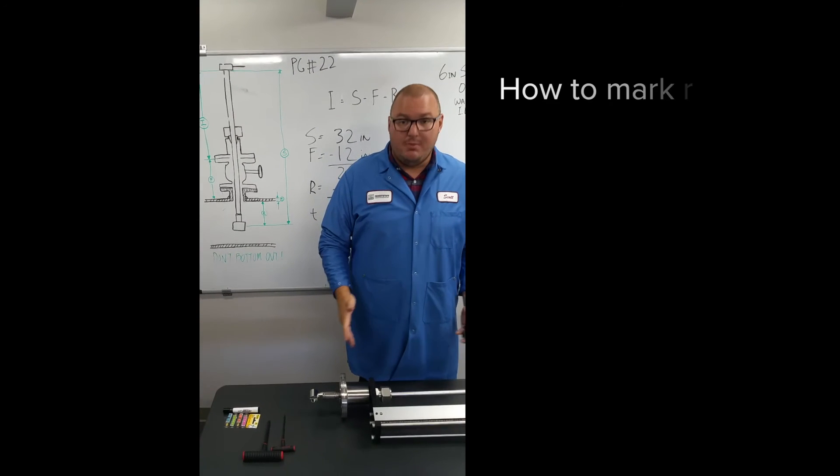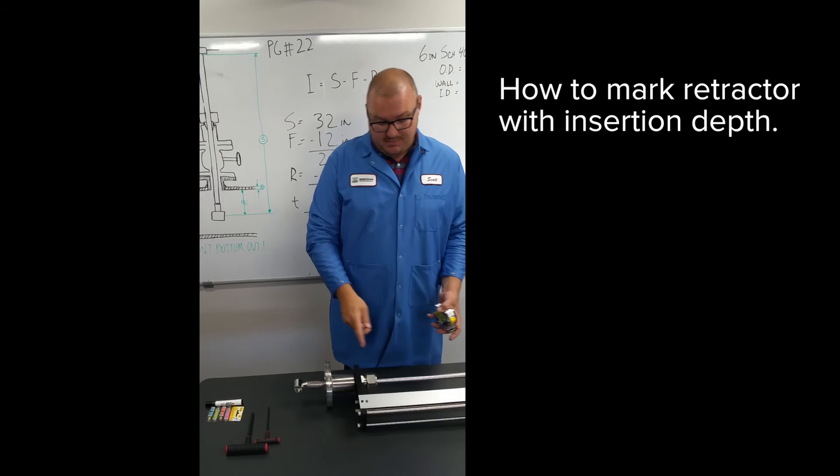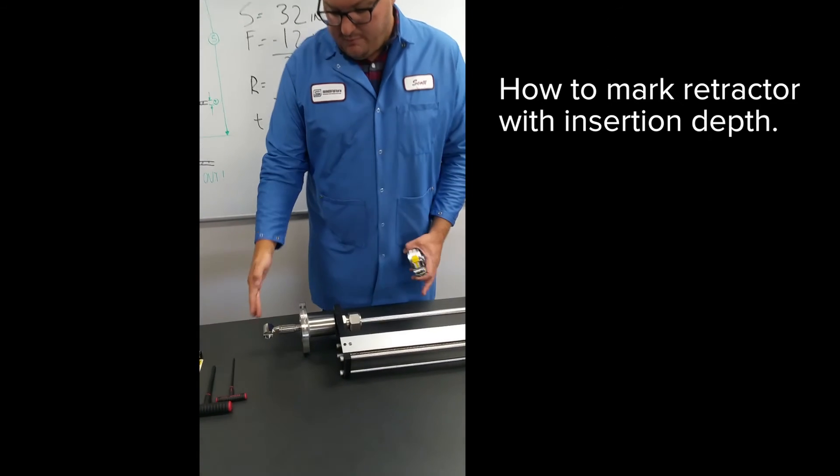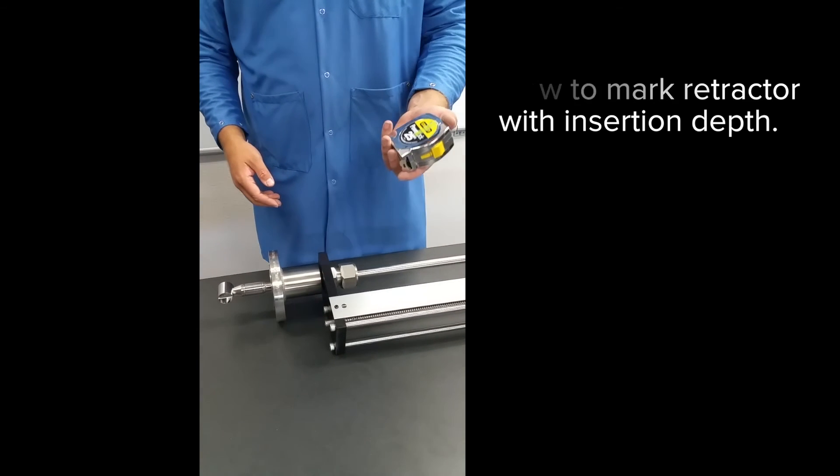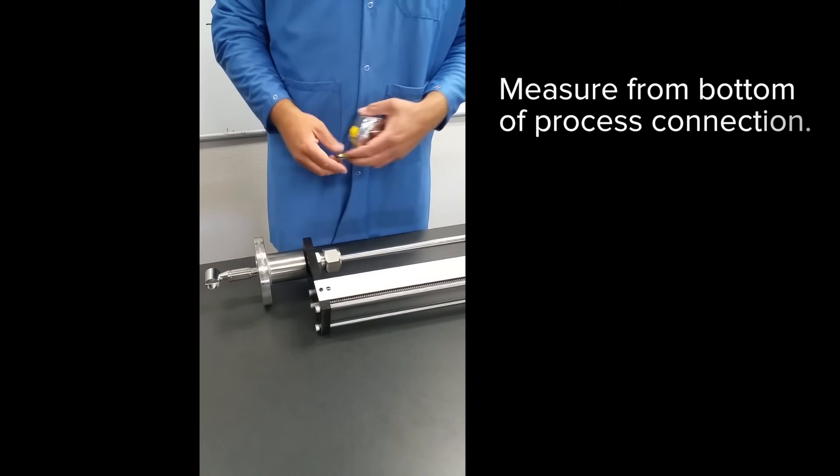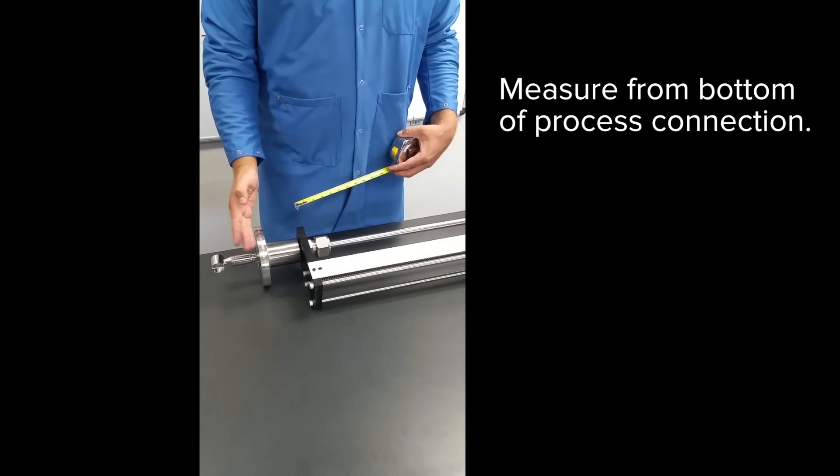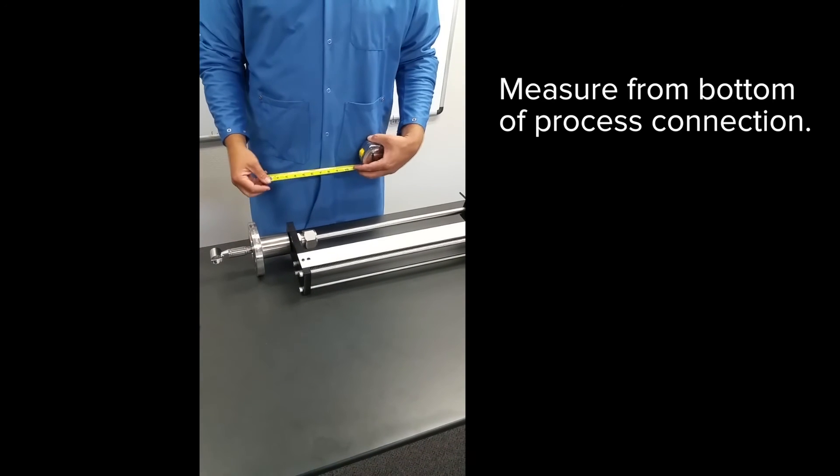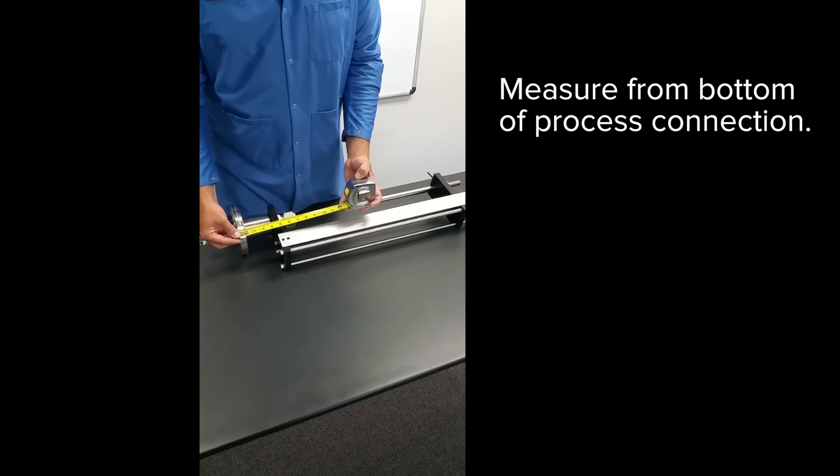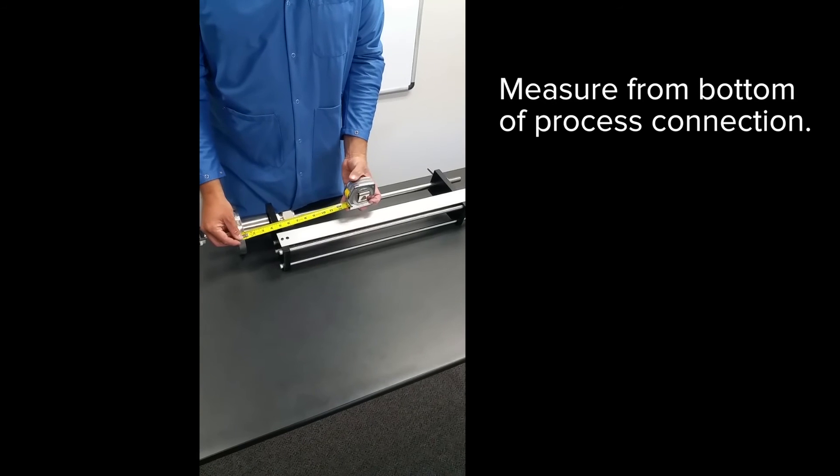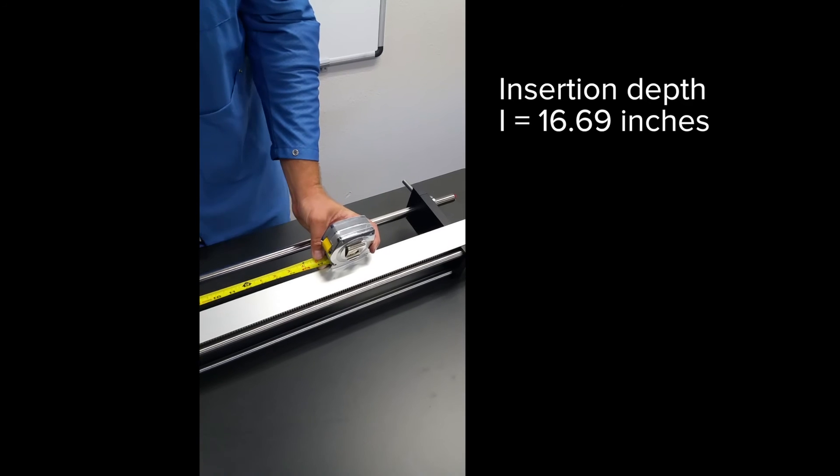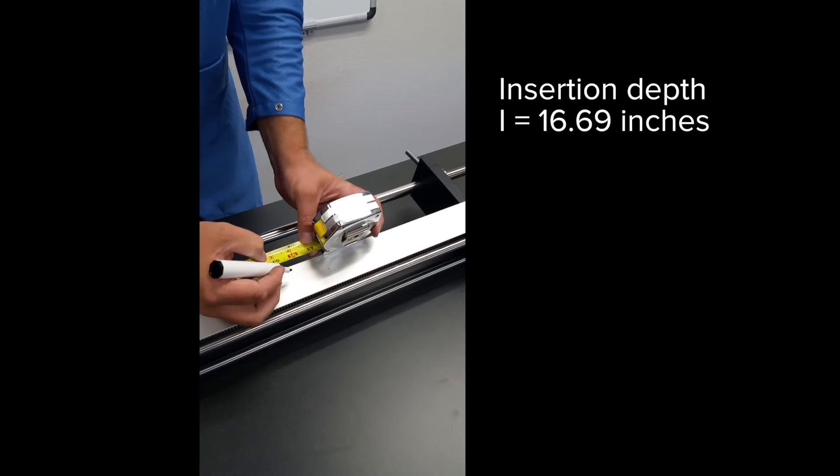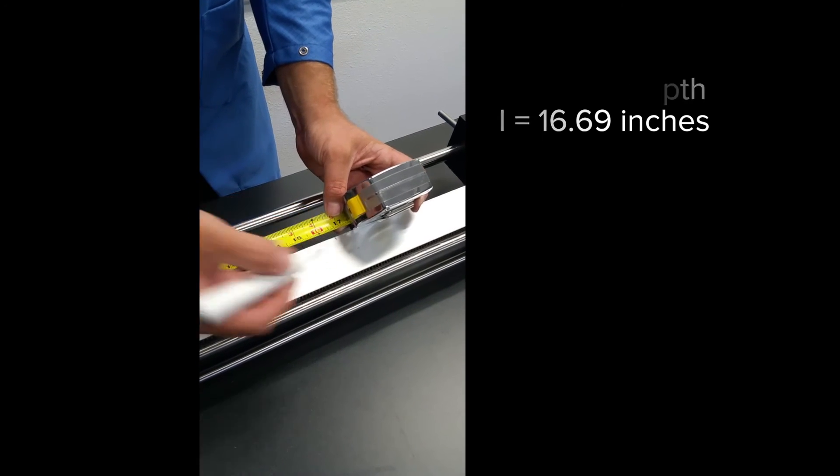Here, I have a mock-up of a probe and retractor to show you how we mark that insertion depth on the retractor. We've got a probe, process connection, and retractor. And I just have a tape measure. It's important when you're measuring, when you're going to mark the retractor for the insertion depth, to know that the measurement begins at the bottom of whatever your process connection is. In this case, we've got a flange process connection. So I just start my measurement here. I go up to my number, which is 16.69, and I'm just going to make a little mark there.